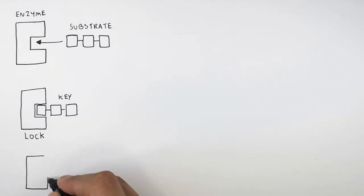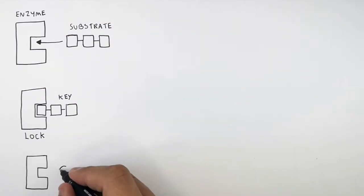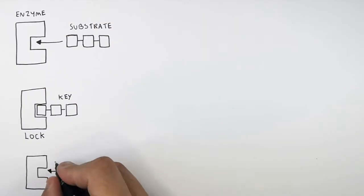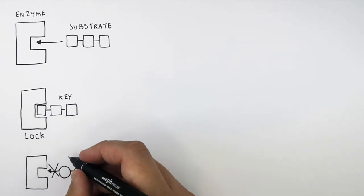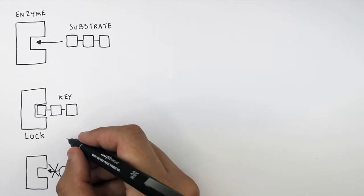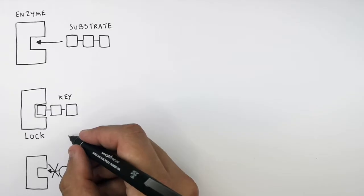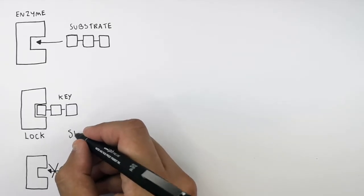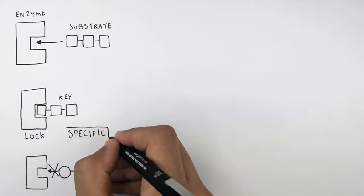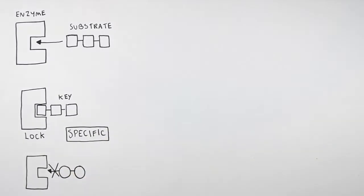This enzyme will not break down other substrates — it is specific to only one substrate. This other substrate has a different shape to the active site of the enzyme, so they are not specific to one another and the substrate will not bind the active site of this enzyme.